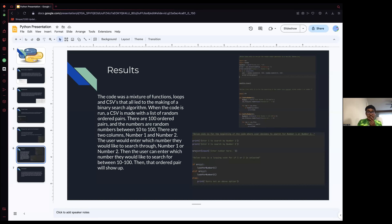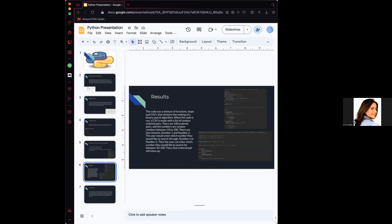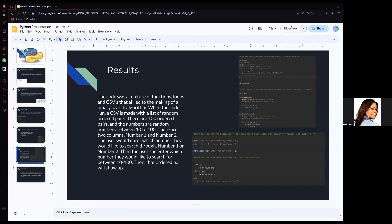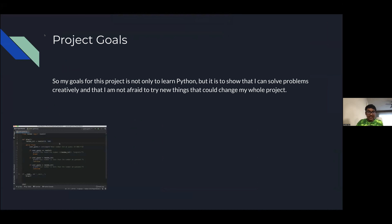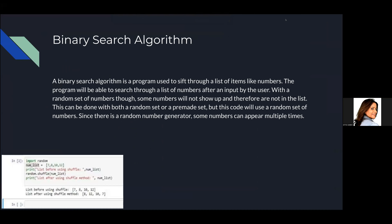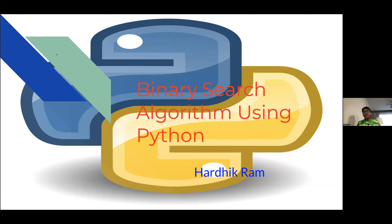Yes, we see you, Hardik. Let me share my screen. Yes, Hardik, we can see your screen. Slideshow? Yeah, slideshow. So my code is a binary search algorithm using Python. Basically, a binary search algorithm is used to sift through numbers and search up numbers after an input by the user. There are multiple ways to do this — I chose a random generator. I randomly generate numbers, and then you can sift through that. Some numbers do appear multiple times.